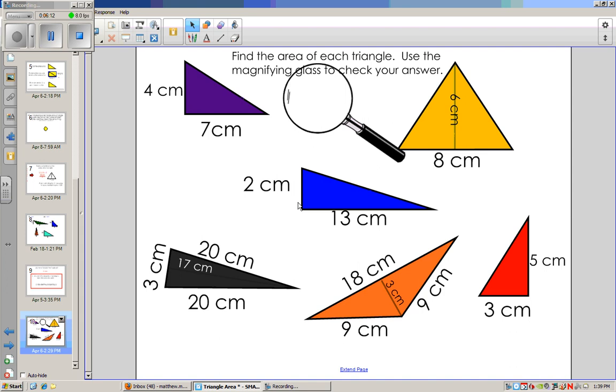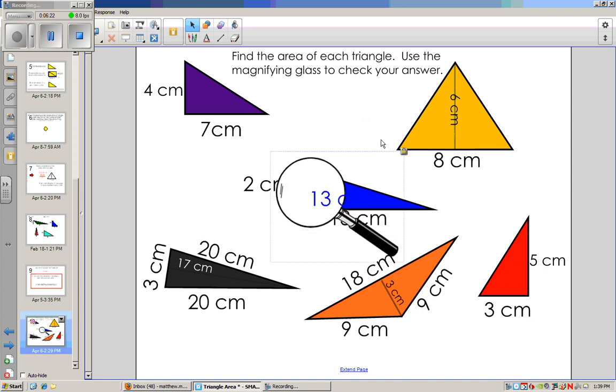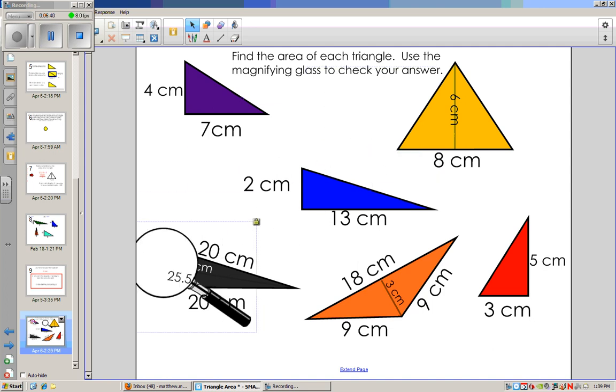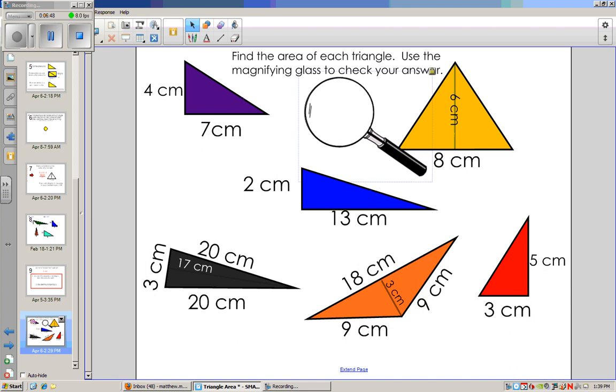Another shape. Two times 13. What would that be? If you said 26, you were correct. Well, what's half of 26? What's 26 divided by two? Well, it's 13 again. So 13 centimeters squared. Over here, you can see we have our base here and our height is going along this way. We also have 20, 20. Which one's the base? Which one's going to be the height? Well, three times 17 is going to end up giving us 51. 51 divided by two. 25.5 or 25 and 5 tenths centimeters squared.